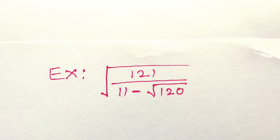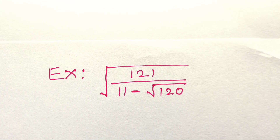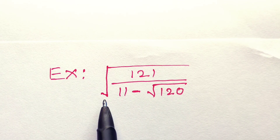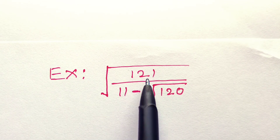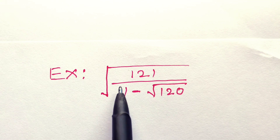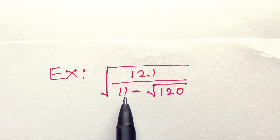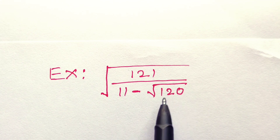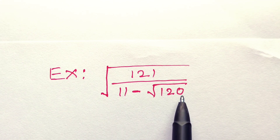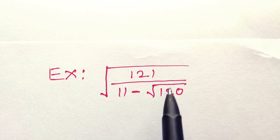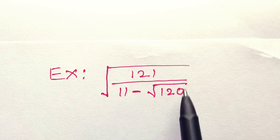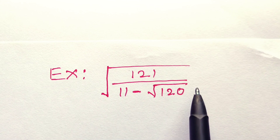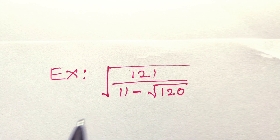Hello everyone, let us solve this sum: square root of 121 divided by 11 minus square root of 120. We have to find the value of this without using a calculator.